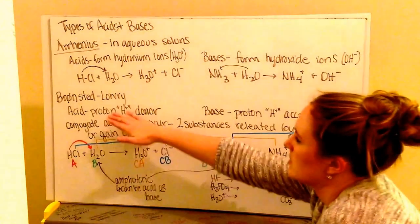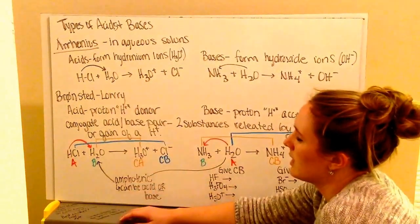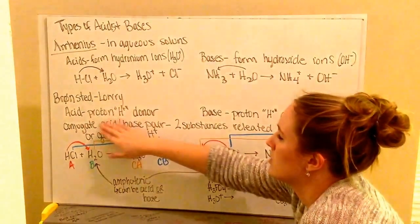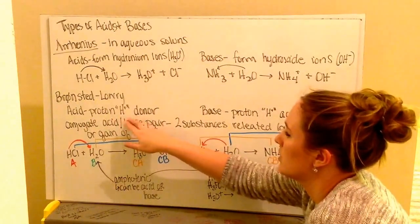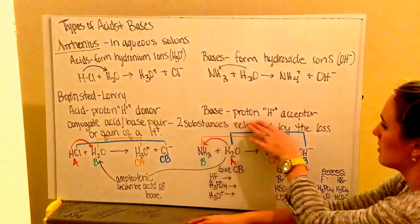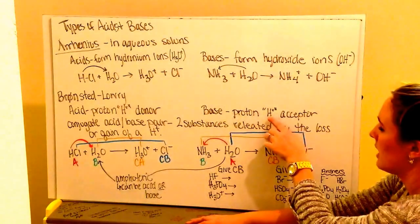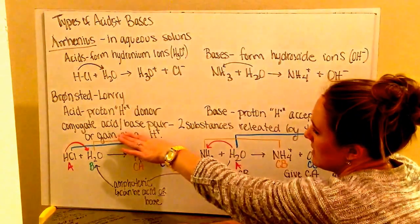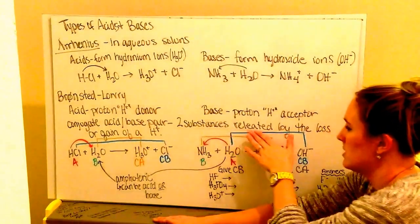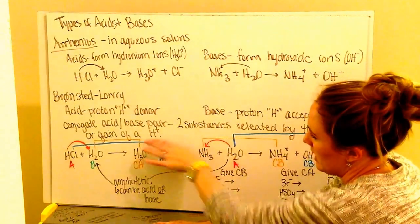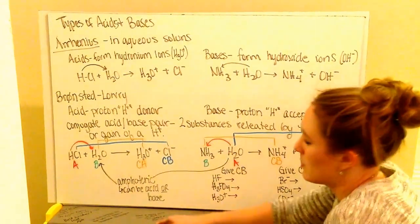Our second type is a Bronsted-Lowry. They have acids and bases as well. An acid and a Bronsted-Lowry acid is going to be a proton or an H+ donor, so a hydrogen ion donor. A base is going to be a proton, H+, hydrogen ion acceptor. We also have conjugate acid and base pairs. These are two substances that are related by the loss or gain of a hydrogen ion.